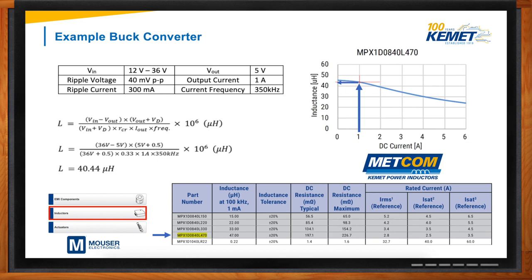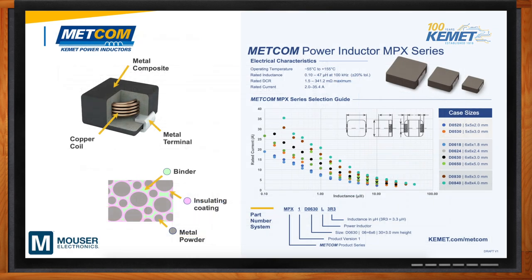METCOM stands for metal composite, and this is the material we use for our power inductors. METCOM power inductors are ideal for DC-to-DC switching power supplies as well as EMI filter inductors. Our metal composite core has a high saturation characteristic, ideal for designs requiring stable inductance across temperature and current. The operating temperature of METCOM ranges from negative 55 degrees Celsius up to 155 degrees Celsius, and the rated inductance goes up to 47 microhenry.